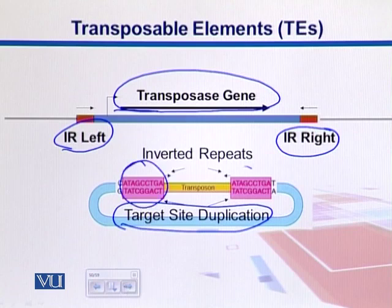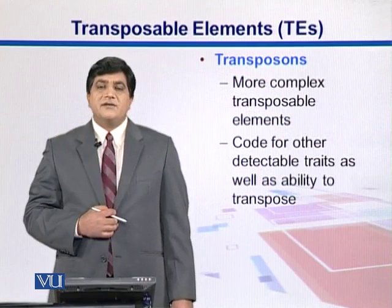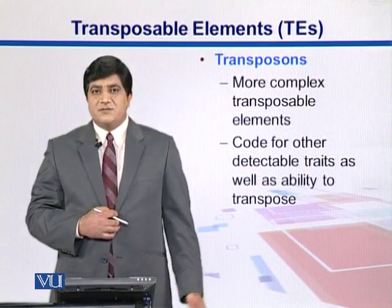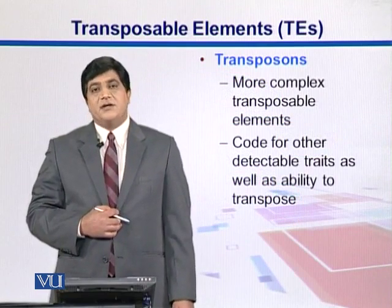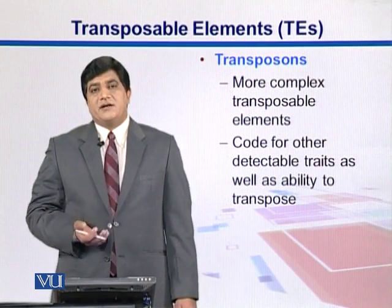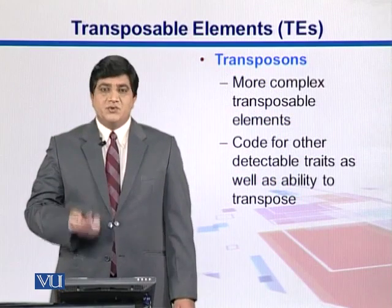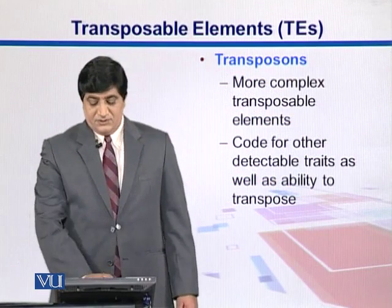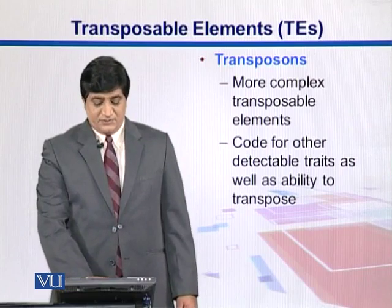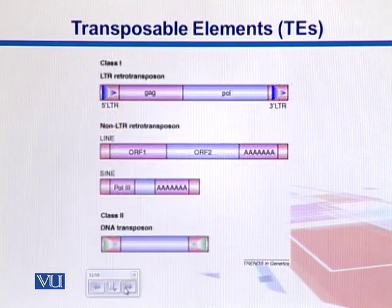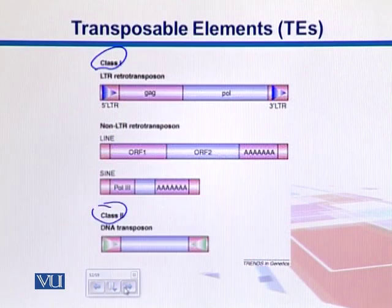Transposons are relatively complex compared to simple IS sequences; they encode additional characters in addition to the genes responsible for their transposition. In this diagram we can see there are two major classes — Class 1 and Class 2. Within Class 1, we have long terminal repeat retrotransposons.